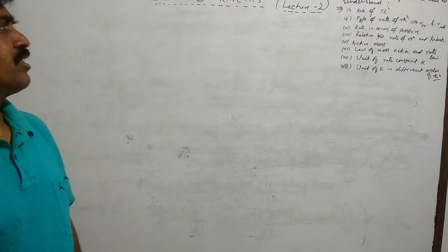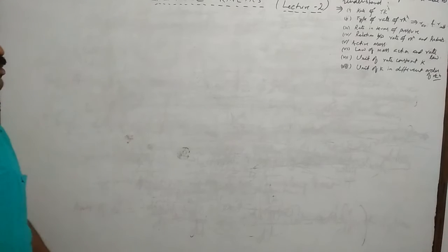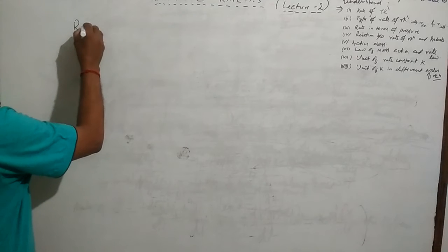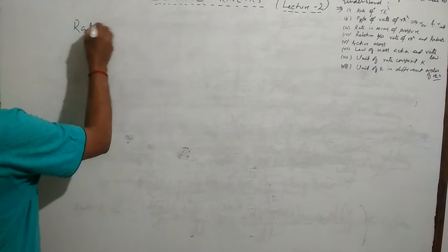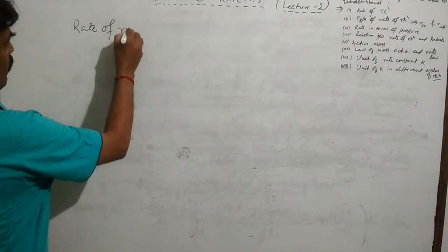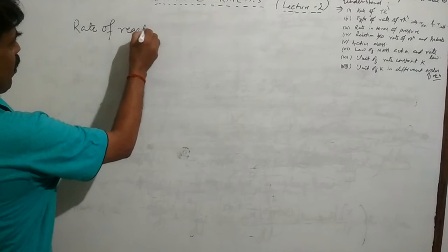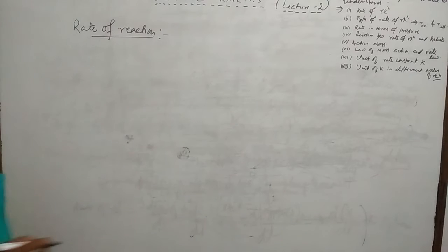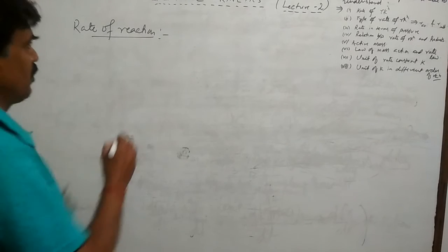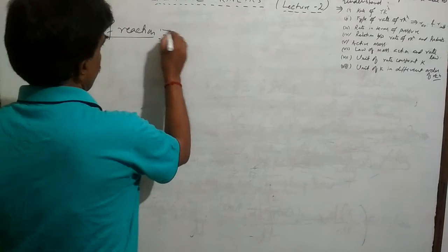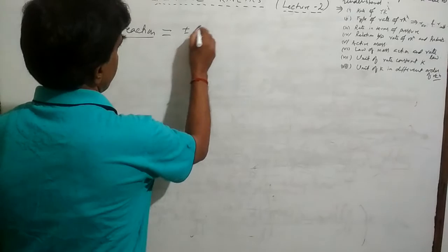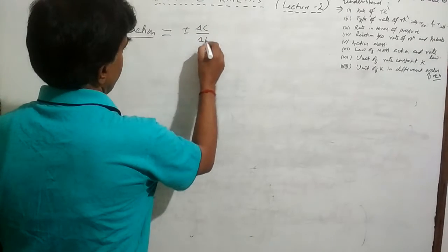Let us start the second video lecture. What is rate of reaction? Rate of reaction is equal to plus or minus delta c by delta t.